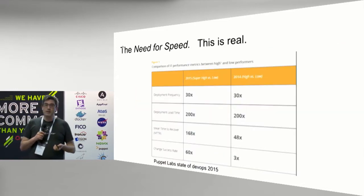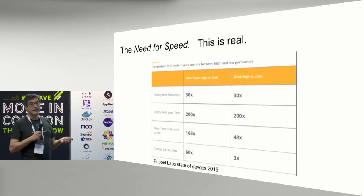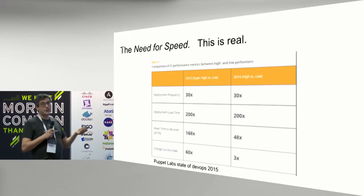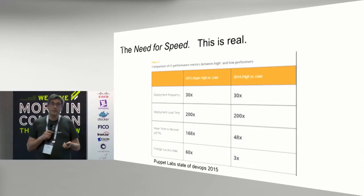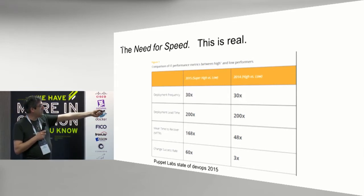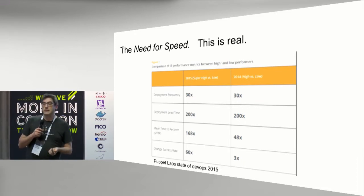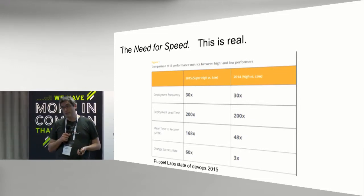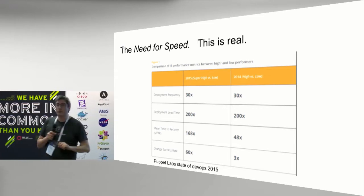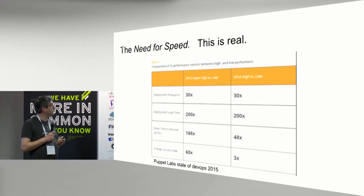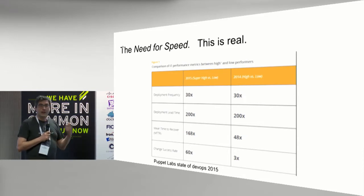And you can actually measure it. This chart is from the Puppet Labs State of DevOps report — a report I highly recommend reading every year — showing the difference for key metrics between what they call high and low performers. Mean time to recovery in 2015: top performers were 168 times faster than low performers. That's the difference between seconds and minutes versus minutes and hours. It grew from 48 times in 2014 to 168 times in 2015 — it's getting worse for the majority of people.